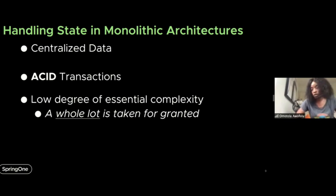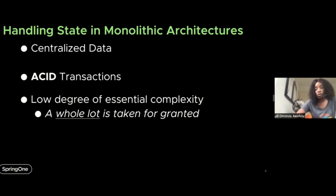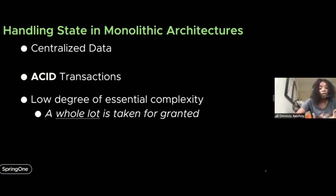Monolithic applications are generally going to be using a centralized data store with a single point of reference for data management and a single enterprise-wide data model. They're also able to leverage ACID transactions for ensuring guarantees of data integrity and reliability. ACID is an acronym: A stands for Atomicity — the all-or-nothing guarantee ensuring that all operations within the scope of the transaction will succeed or fail as a unit. C is for Consistency — a data correctness guarantee ensuring that updates from a transaction do not violate the invariants of the data. For example, you shouldn't be able to update an employee's age to a negative value or assign them a future birth date.